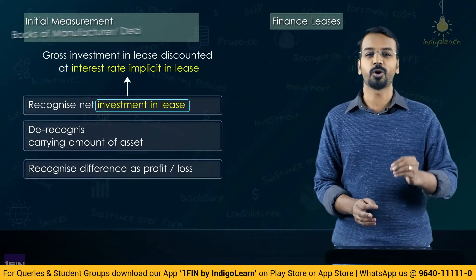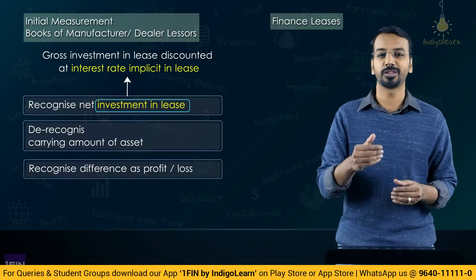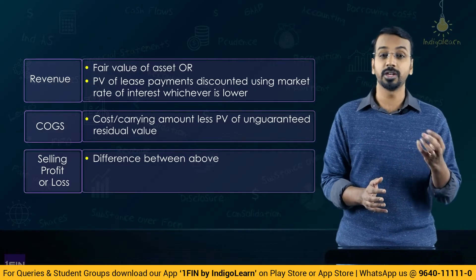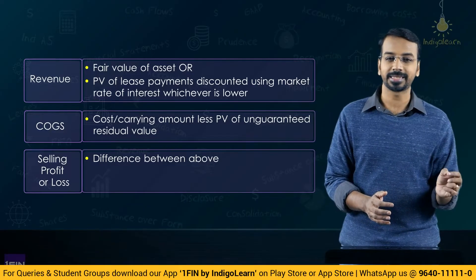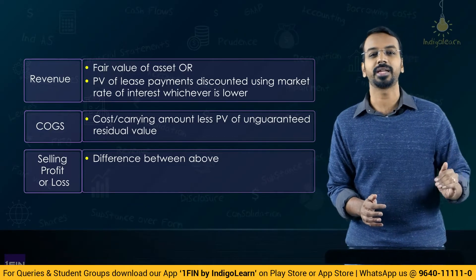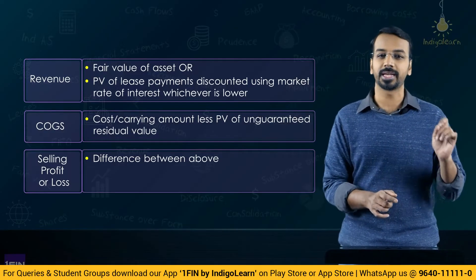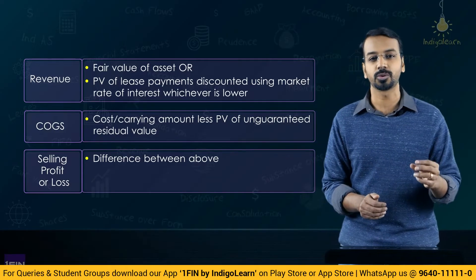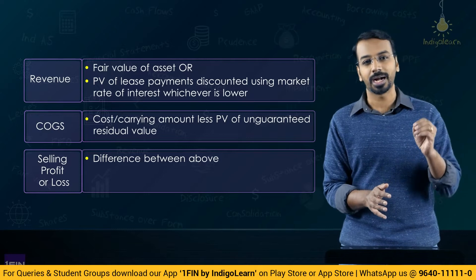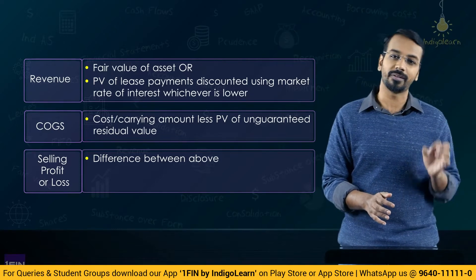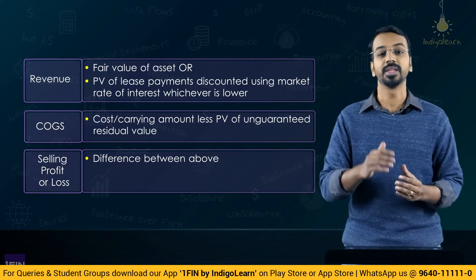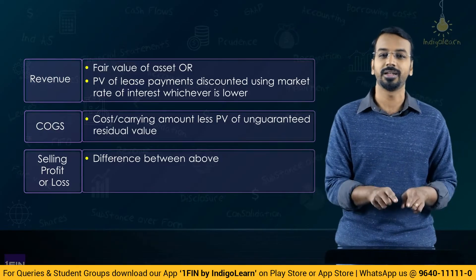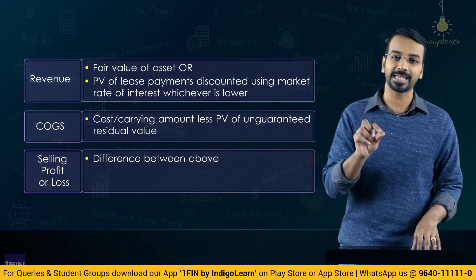We also spoke about accounting in the books of a manufacturer or dealer lessor. These are entities who would normally be selling an asset but give the customer an option to take it on lease as well. For a manufacturer or dealer lessor, there is the concept of recognizing revenue as well as selling profit. Revenue is equal to the lower of the fair value of the underlying asset or the present value of lease rentals discounted at market interest rates. Cost of goods sold is the carrying amount of the underlying asset less the present value of the unguaranteed residual value. The difference is accounted for as profit.